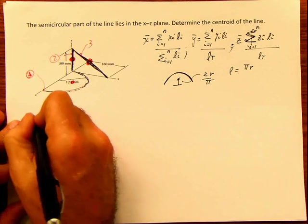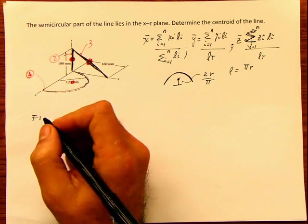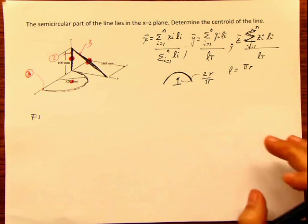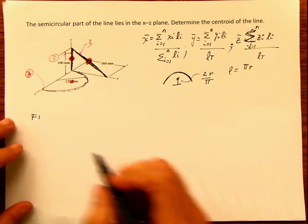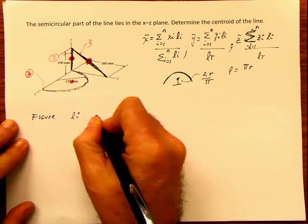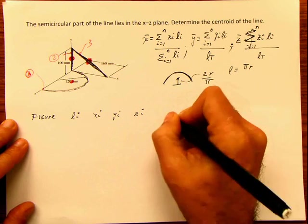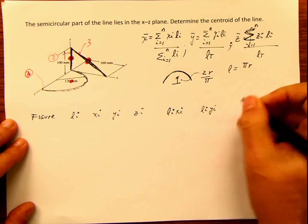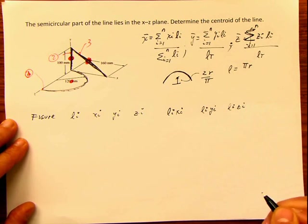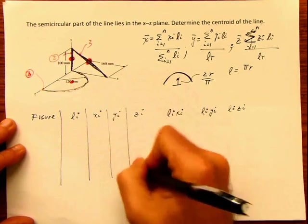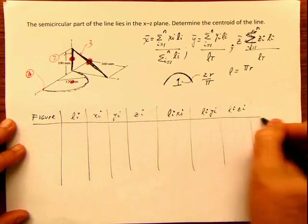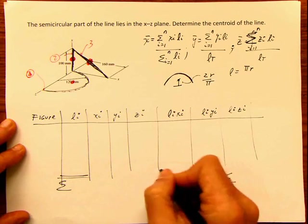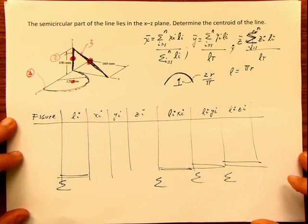Now we have to build our table. You don't have to build these tables all the time, but we're learning the process and I like to be organized. Once you finish statics, this will just be one equation you put in your calculator. For now, the table columns are: figure, li, xi, yi, zi, then li·xi, li·yi, and li·zi. We sum each column at the end, then divide the column sums by the total length to get the centroid coordinates.